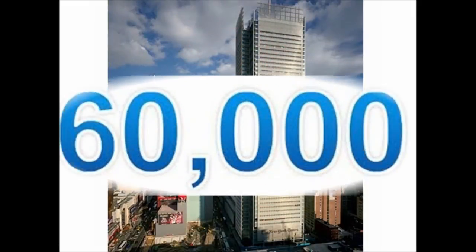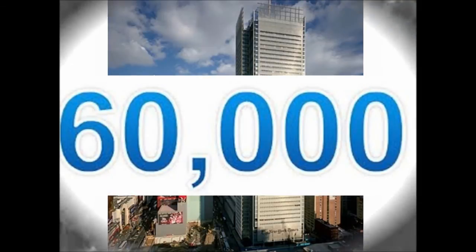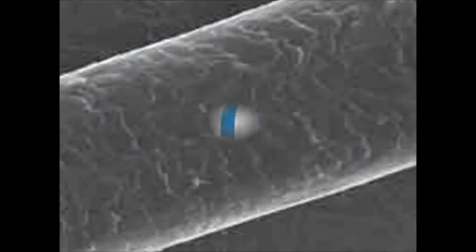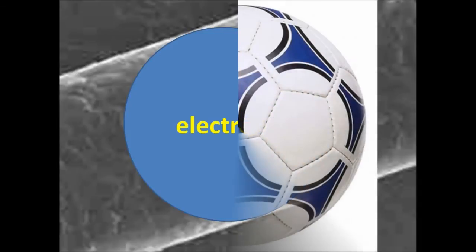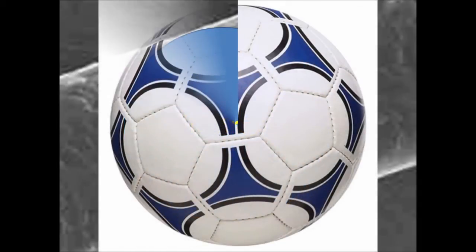If we were to enlarge the iron atom to a size 60,000 times greater than the New York Times building, which is 319 meters tall, then the diameter of an electron will be the width of a human hair, and a proton or neutron will be the size of a football.